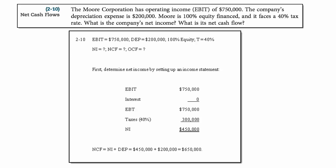At problem 2-10, we see that the Moore Corporation has operating income of $750,000, it has depreciation expense of $200,000, it's 100% equity financed, and it faces a 40% tax rate. So what's the company's net income and what's its cash flow?